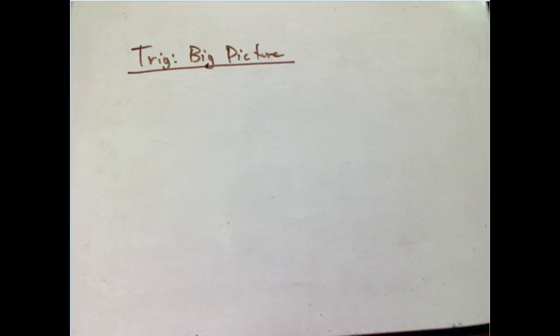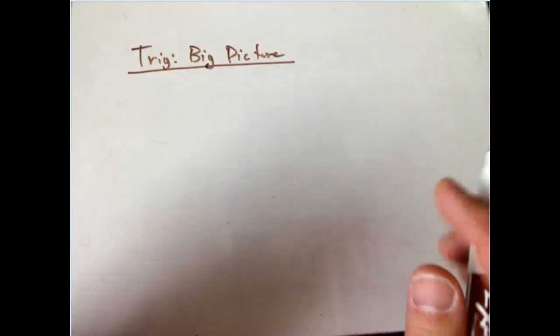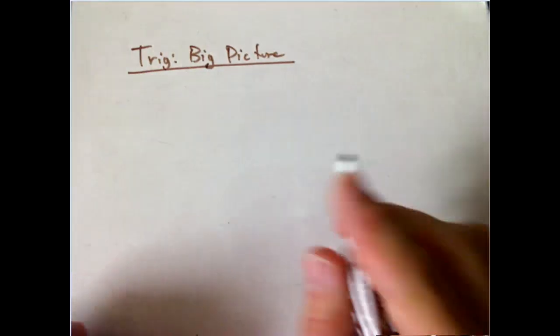In our trig book, they have three sections in a row where I think it's a bit confusing. They seem to define the trig functions three different times. And I want to make sure that people know it's all one thing, just different aspects of it. So here's how I want to say it.